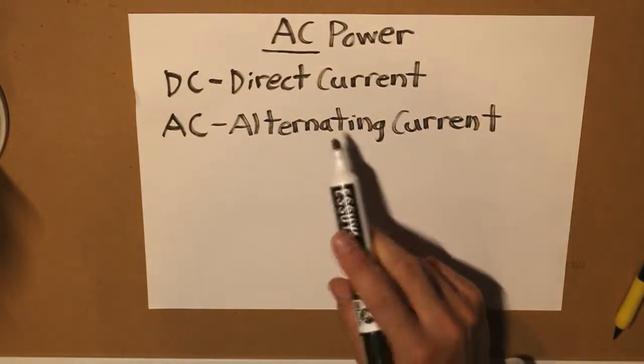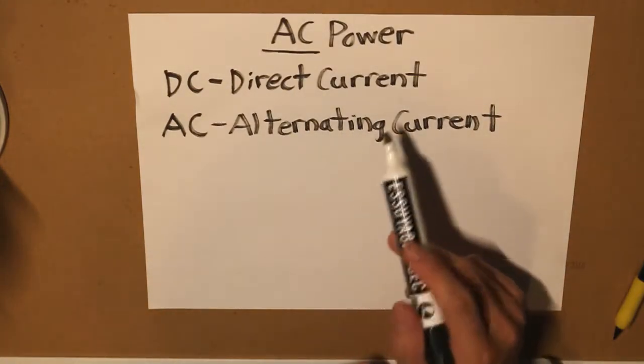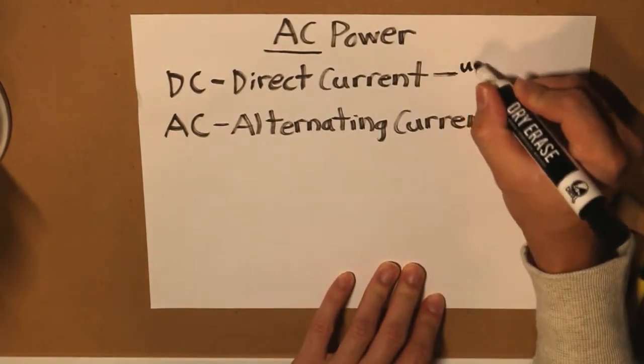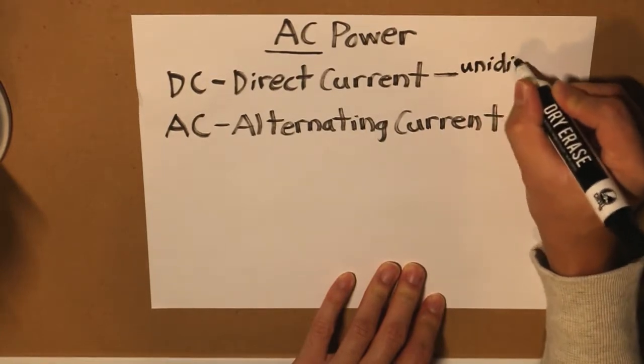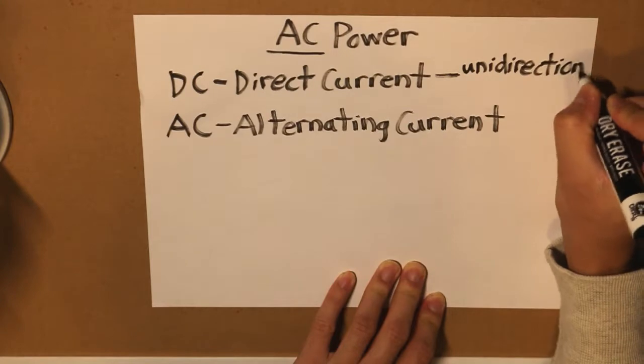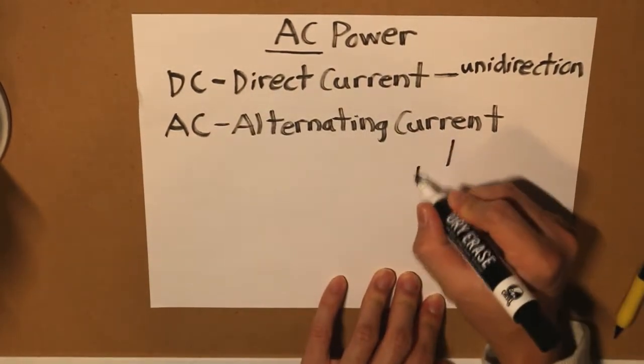And these two different currents can be described by two different things. Direct meaning that the current is traveling unidirectional, and for alternating current it is bidirectional.